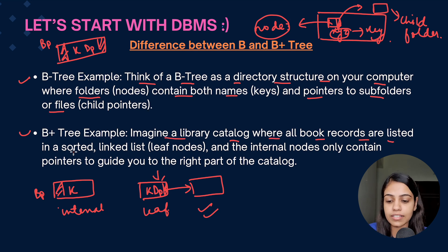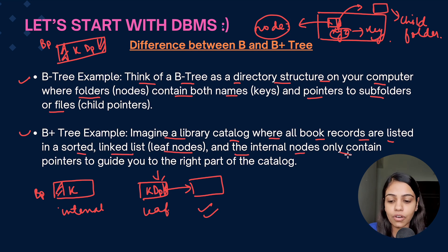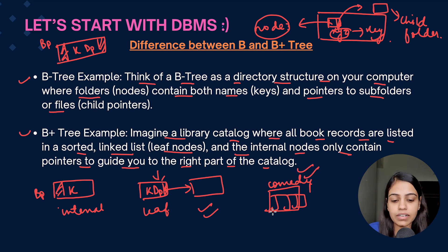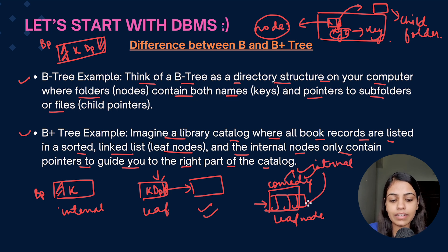For B+ tree, imagine a library catalog where all book records are listed in a sorted linked list manner at the leaf nodes, and the internal nodes only contain pointers to guide you to the right part of the catalog. For example, if I want books in the comedy section, I go to that section and find the books sorted in a linked list. The comedy section acts as an internal node, and the actual books are at the leaf nodes.